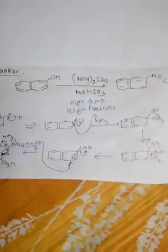Now, how can we add an OH group at the C2 position? This can be done by the following process. As we know, the SO3H group can be added to the C2 position, as shown in the previous video. Then by adding NaOH...